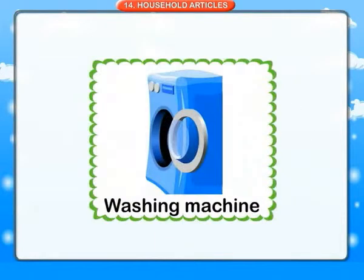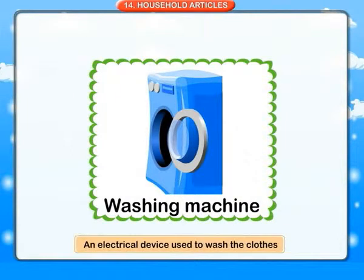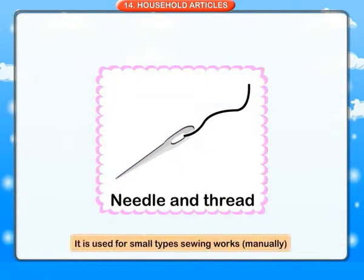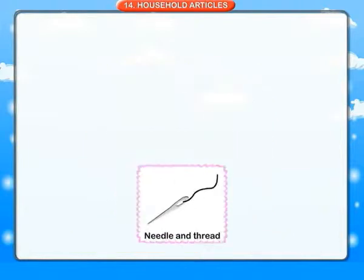Washing machine: an electrical device used to wash the clothes. Needle and thread: used for small types of sewing work done manually.